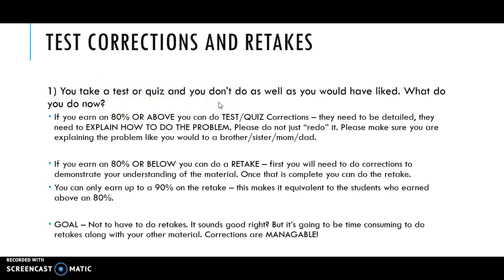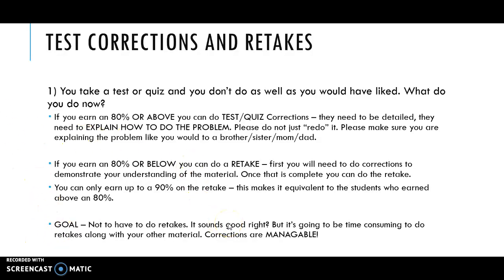The last thing to go over is test and quiz corrections and retakes. If you earn an 80% or above, you can do corrections — they need to be detailed and explain how to do the problem as if you're teaching a sibling or parent. You can earn half credit back, bringing you up to 90%. If you earn 80% or below, you can do a retake: first complete corrections to demonstrate understanding, then take the retake, earning up to 90%. This applies to multiple choice only. Your goal, however, should be to not need retakes — corrections are manageable, but retakes are time-consuming.